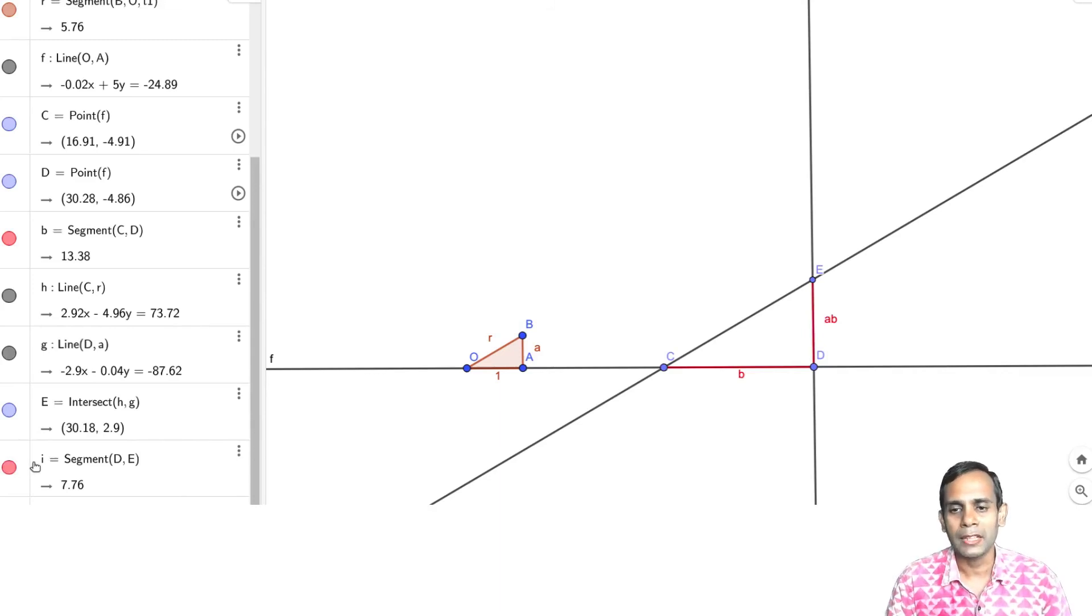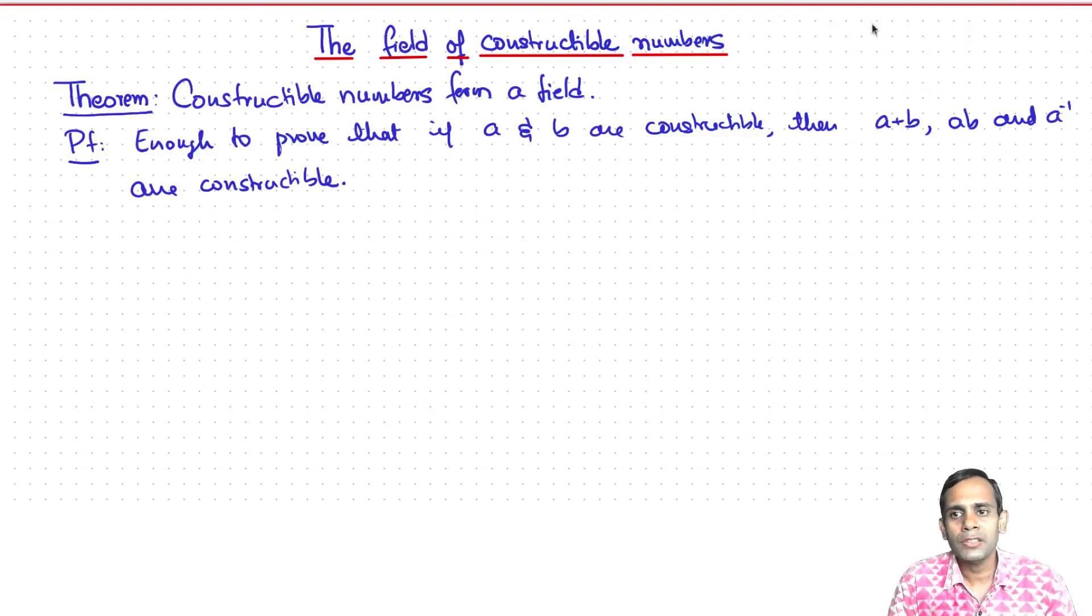And so given A and B, we've constructed the product AB. So now it remains to show that if I can construct A, then I can construct A inverse.